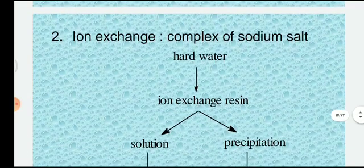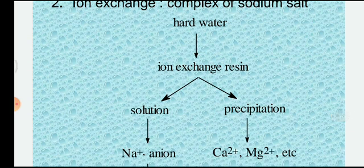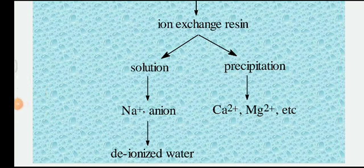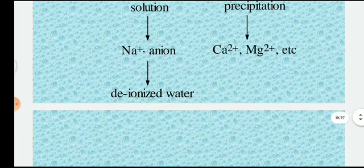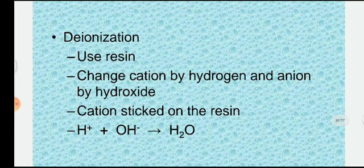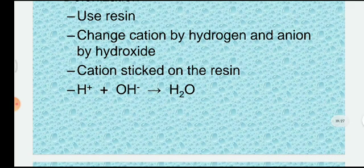The second method is ion exchange. Water is softened using a complex of sodium salt in hard water passed through an ion exchange resin. Sodium and anions are exchanged, and calcium and magnesium ions precipitate out. The de-ionization process uses resin to replace cations with hydrogen and anions with hydroxide.